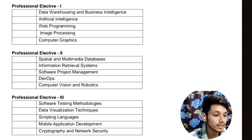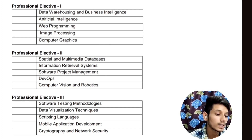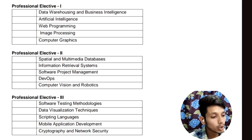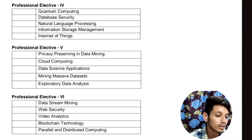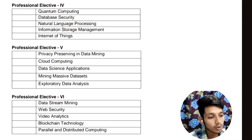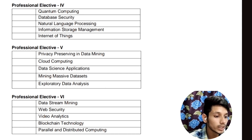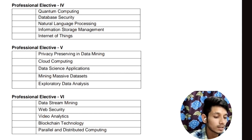In Professional Elective 3, the subjects will be Software Testing Methodologies, Data Visualization Techniques, Scripting Language, Mobile Application Development, and Cryptography and Network Security. In Professional Elective 4, the subjects will be Quantum Computing, Database Security, Natural Language Processing, Information Storage Management, and Internet of Things.